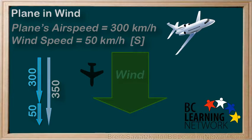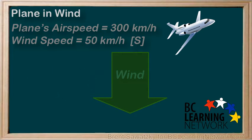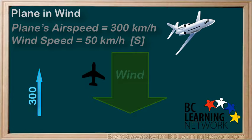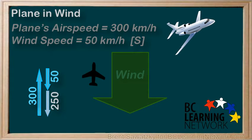What about the slowest ground speed, while still maintaining that airspeed of 300 kilometers per hour? We aim in the opposite direction, right against the wind. Now our vector diagram would show the airspeed of the plane, then the speed of the air relative to the ground — the wind — in the opposite direction, and the resultant is now 250 kilometers per hour.